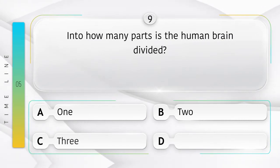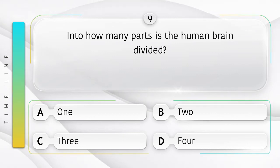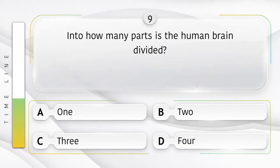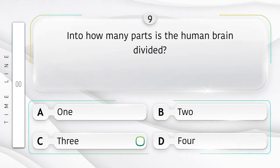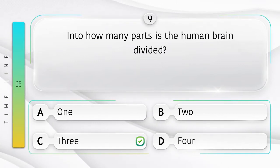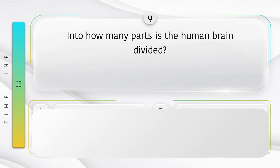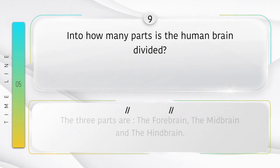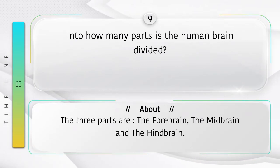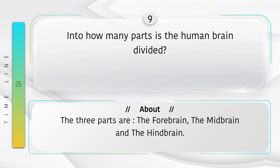Into how many parts is the human brain divided? Option A: one, B: two, C: three, D: four. Answer is option C: three. Did you know the three parts are the forebrain, the midbrain, and the hindbrain?